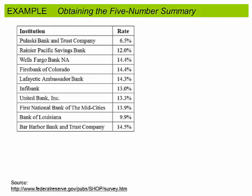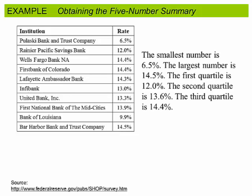Here we have our raw data, and if we were to take this raw data and put it into StatCrunch, we would see that the smallest number is 6.5%, the largest is 14.5%,